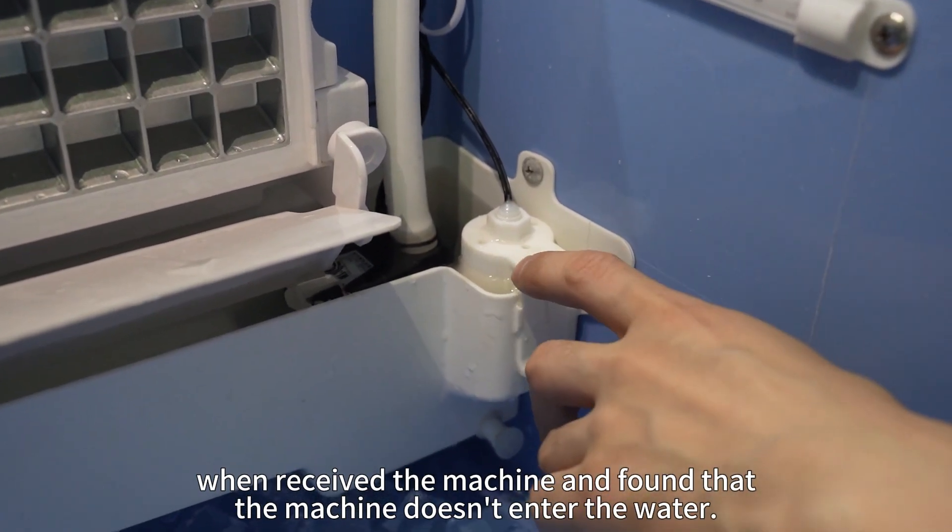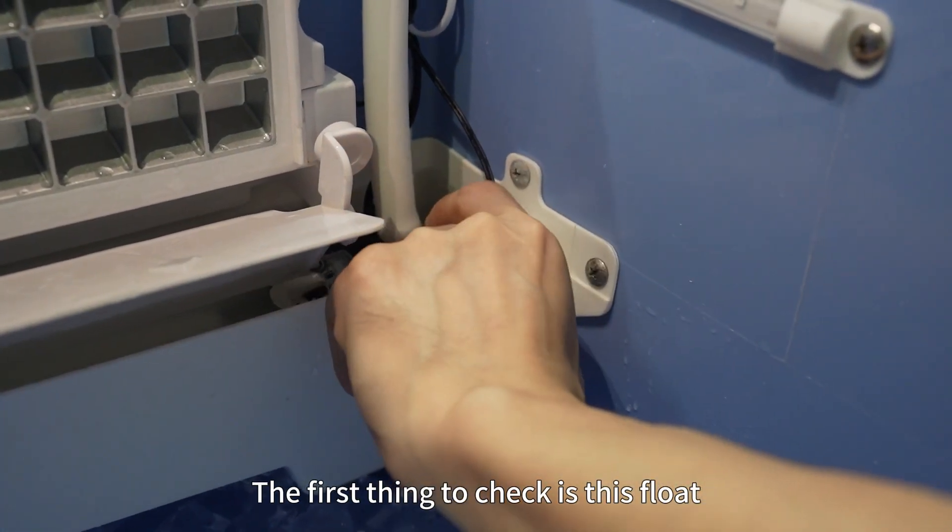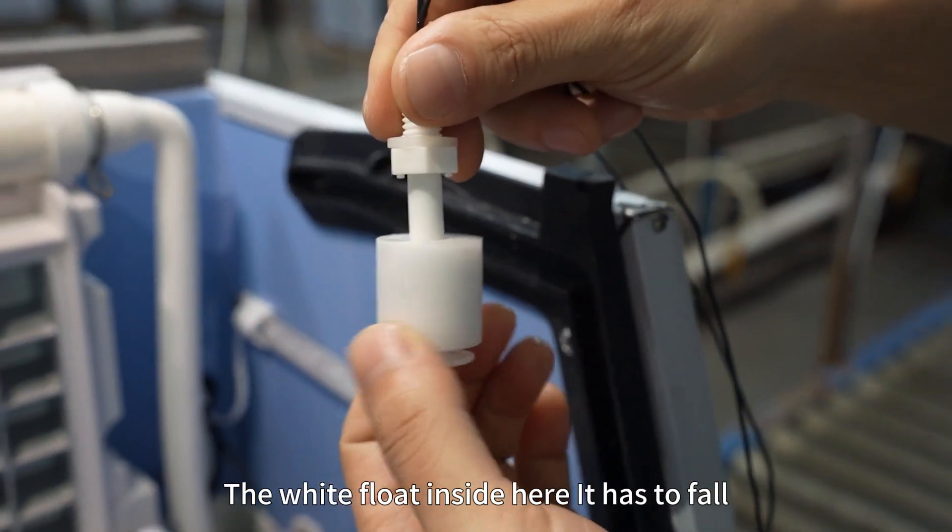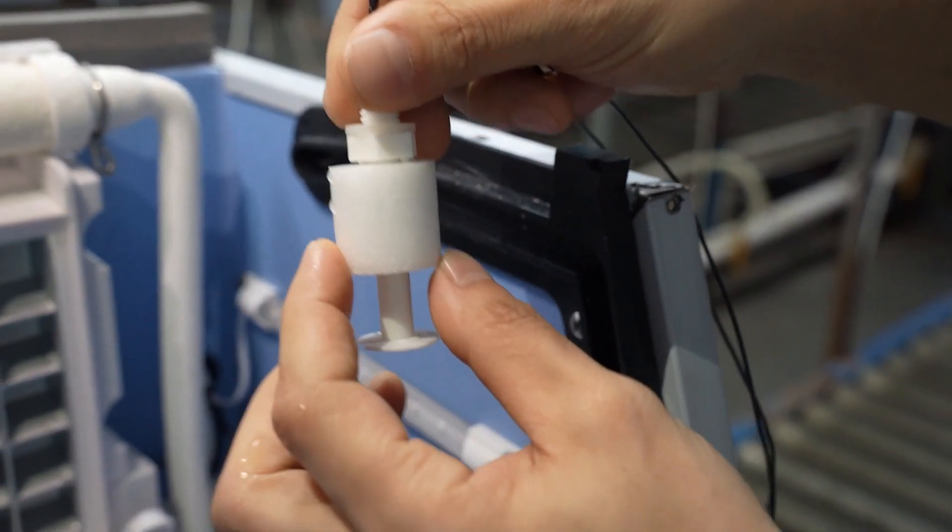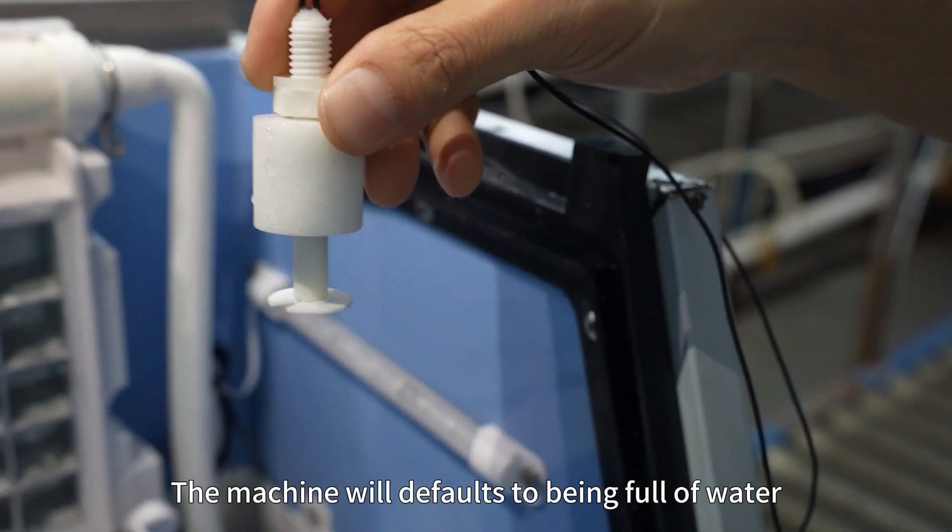When you receive the machine and find that the machine doesn't enter the water, the first thing to check is this float. The white float inside here has to fall. If this float gets stuck and doesn't fall, the machine will default to being full of water and it won't let the water in.